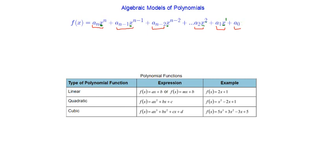The a values in the definition are coefficients — values in front of the x terms. It could be any variable by the way; it could be a y or an a. It doesn't matter what the variable is. We typically use x, but all of the a's with subscripts are just indicating that there are coefficients in front of each of those variables.